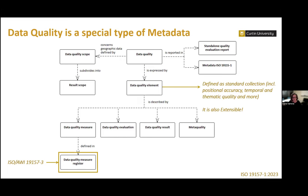In the general requirements, we also say that data quality measures sit in a data quality measure register, and that is the scope and content of ISO 19157 Part 3. Data quality is reported, and it can be in two ways — it can cover the overall dataset or data product, and for more detail, typically for internal purposes, there is a standard quality evaluation report, which serves producers to record or attribute quality evaluation when needed.